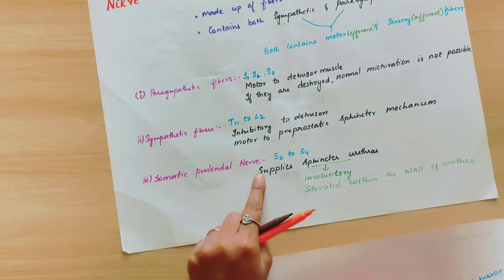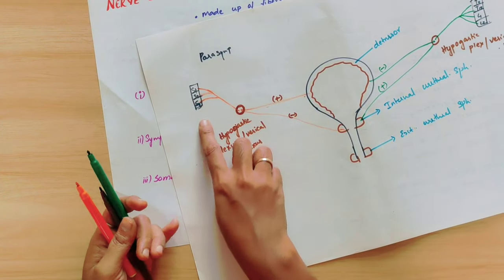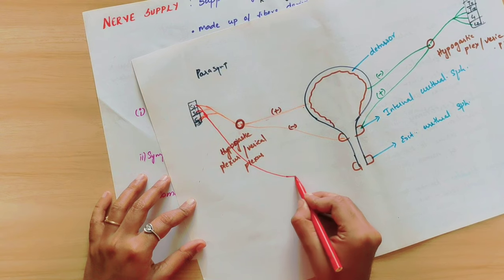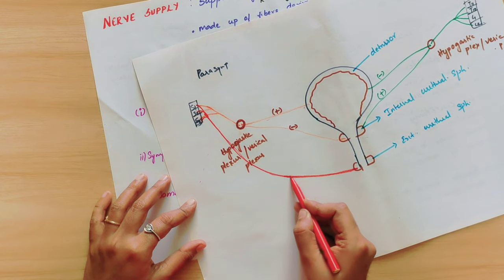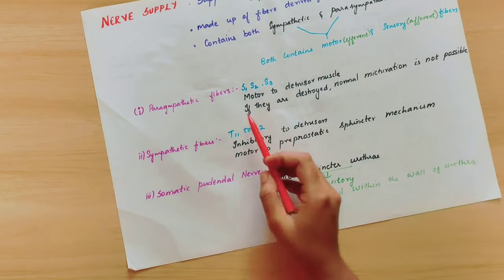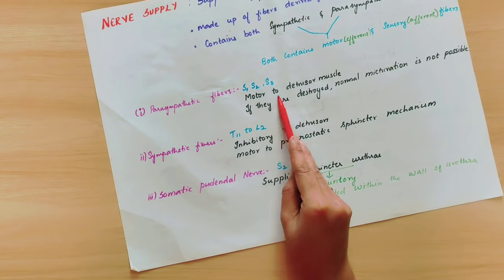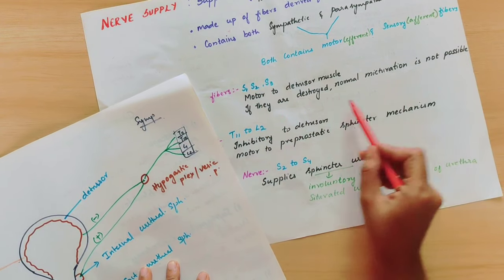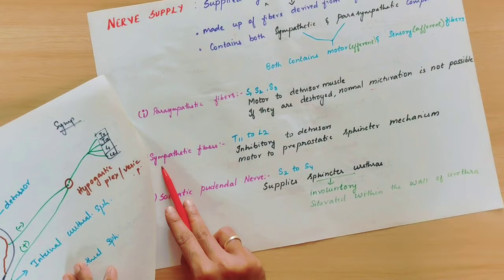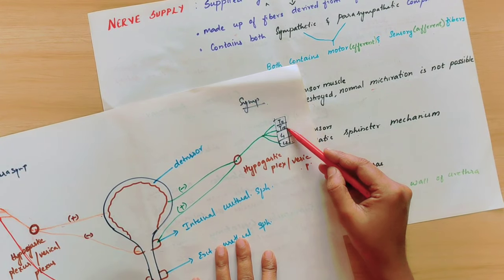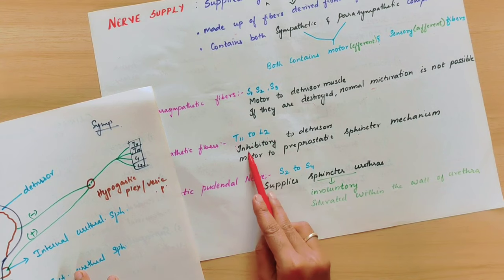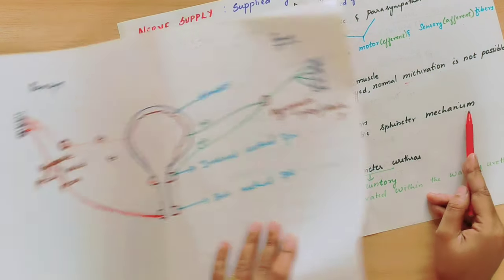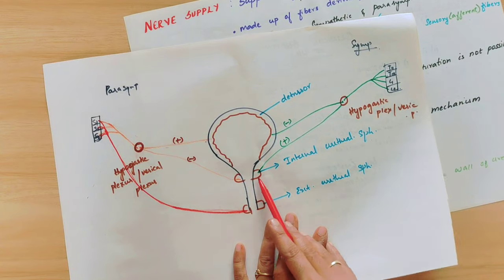There is also somatic innervation by the pudendal nerve, arising from S2, S3, and S4. The pudendal nerve supplies the external urethral sphincter. The parasympathetic component (S2, S3, S4) is motor to the detrusor muscle and motor to the pre-prostatic sphincter mechanism. The internal urethral sphincter receives motor function through this pathway.